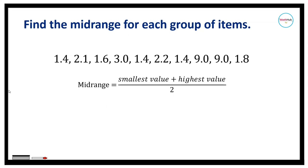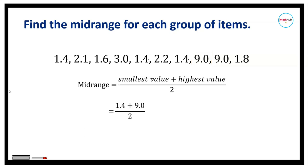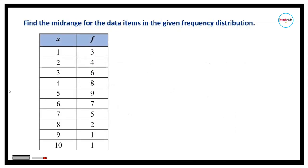For this next set of data entries, let us identify the lowest data value, which is 1.4, and add that to the highest data value, which is 9.0, then divide the sum by 2. So 1.4 plus 9.0 divided by 2 is equal to 5.2. The mid-range for this data set is 5.2.